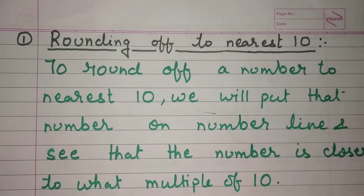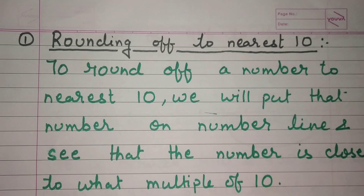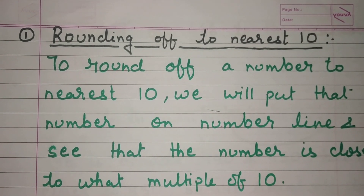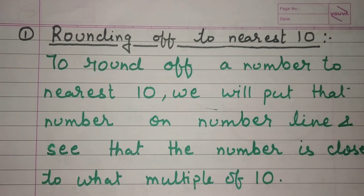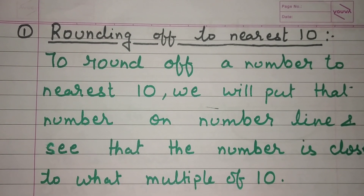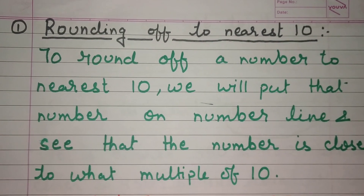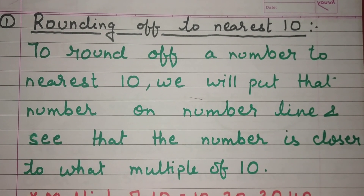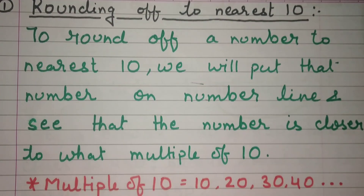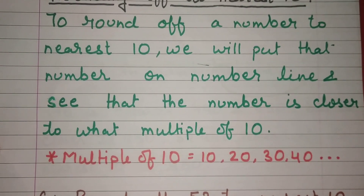Now let's come back to the rounding off process. The first way to round off is rounding off to nearest 10. To round off a number to nearest 10, we put that number on a number line and see which multiple of 10 it is closest to — for example, 10, 20, 30, 40, and so on.